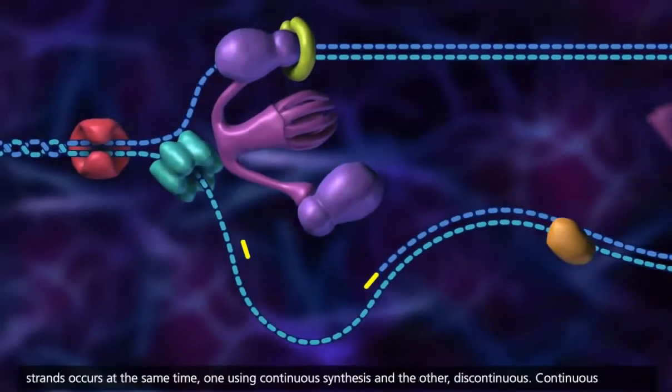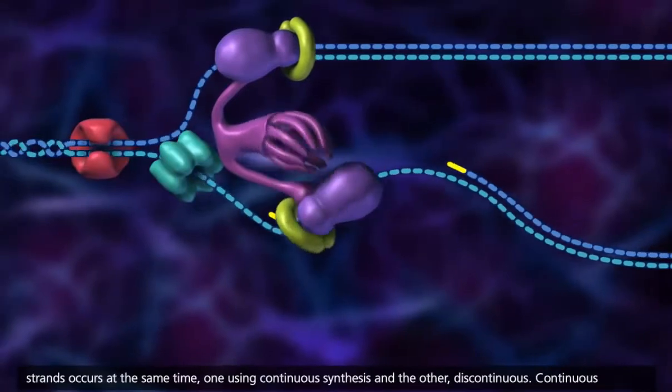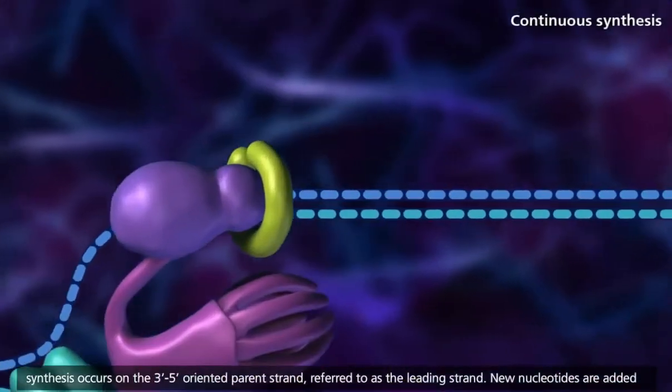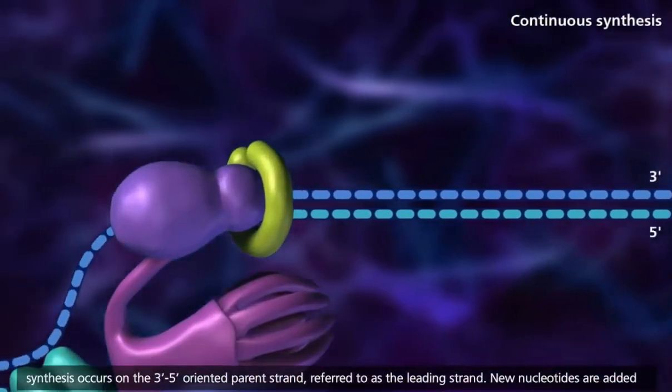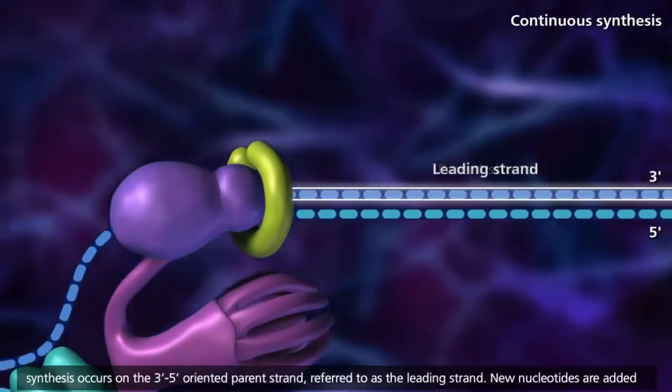Replication of both strands occurs at the same time, one using continuous synthesis and the other discontinuous. Continuous synthesis occurs on the 3' to 5' oriented parent strand, referred to as the leading strand.